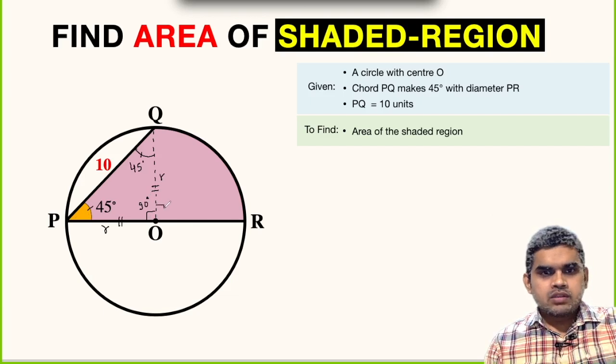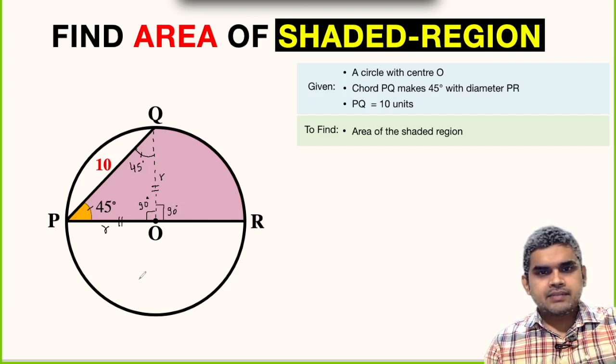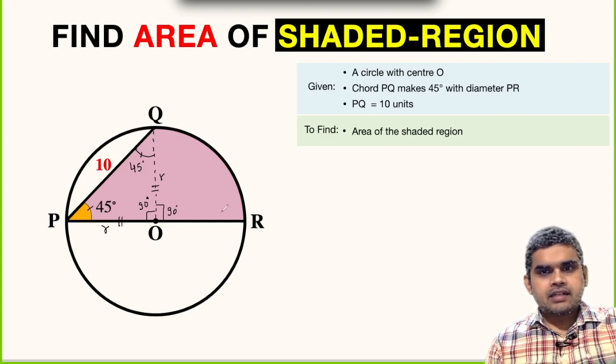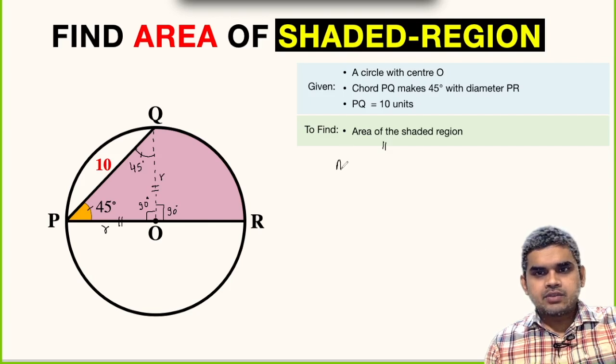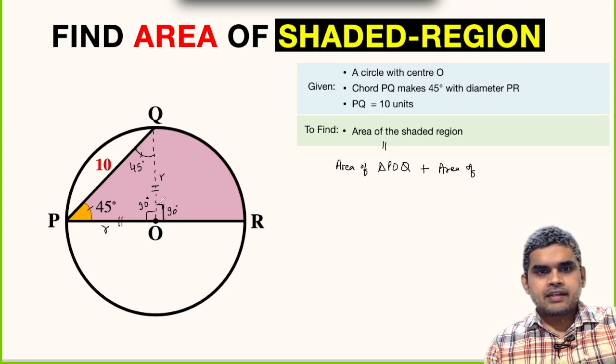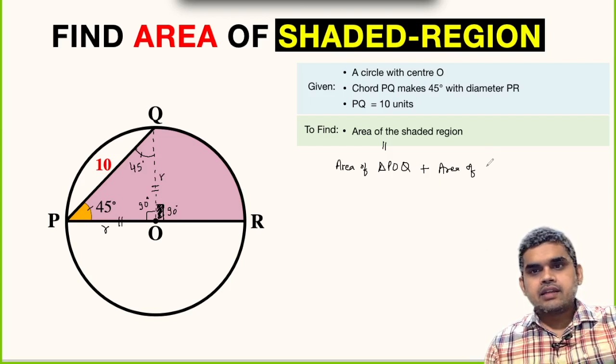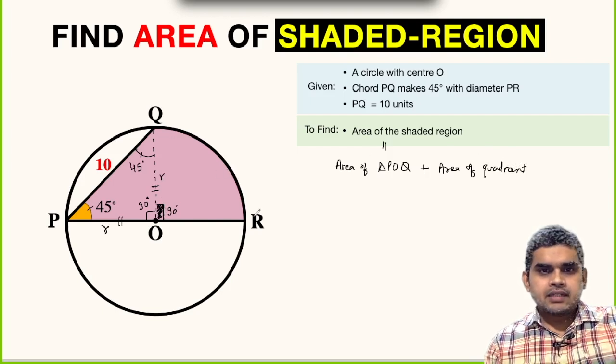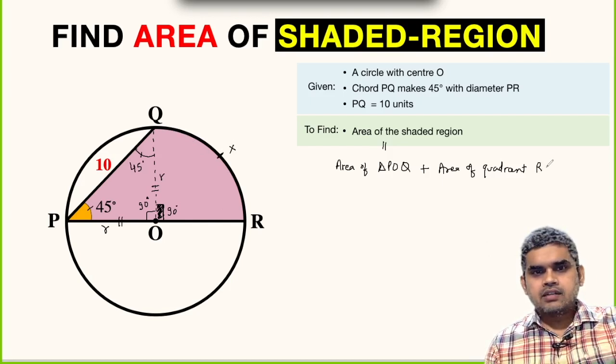POR is the diameter, so at point O this angle will also be 90 degrees. In short, we can say that area of shaded region is equal to area of triangle POQ plus area of this quadrant, because this angle is 90 degrees. One-fourth of a circle is a quadrant.